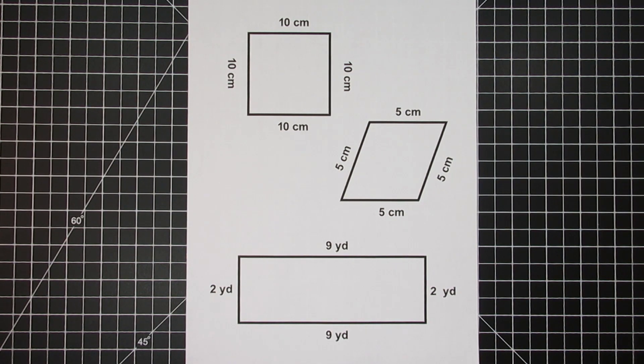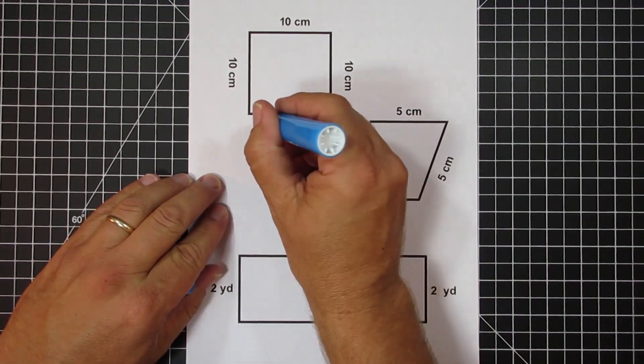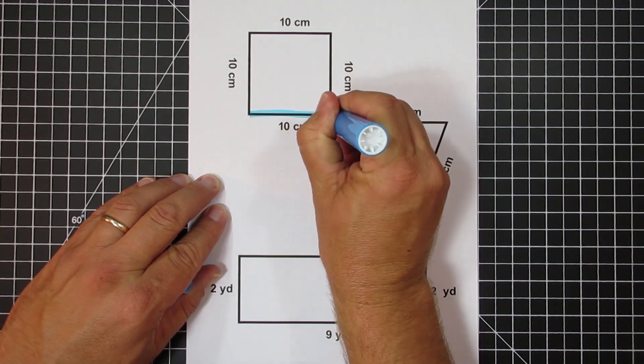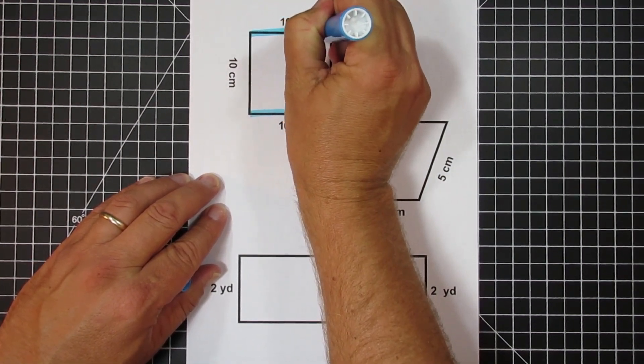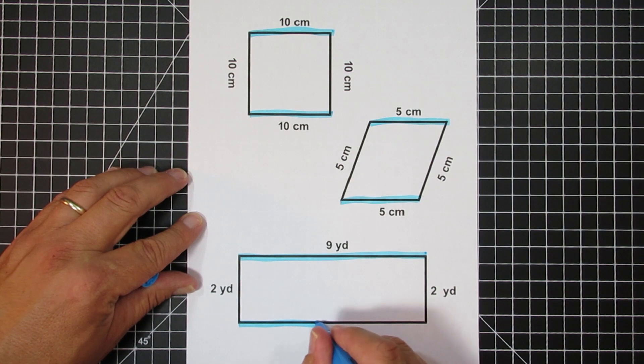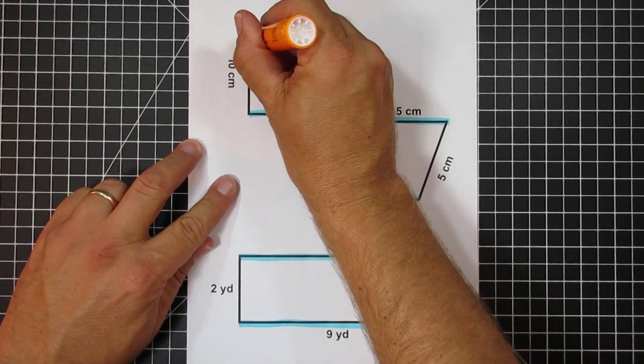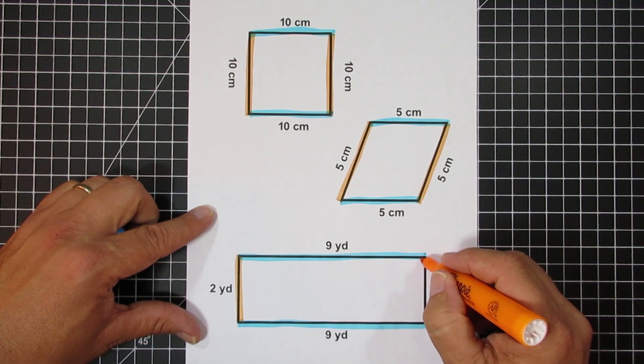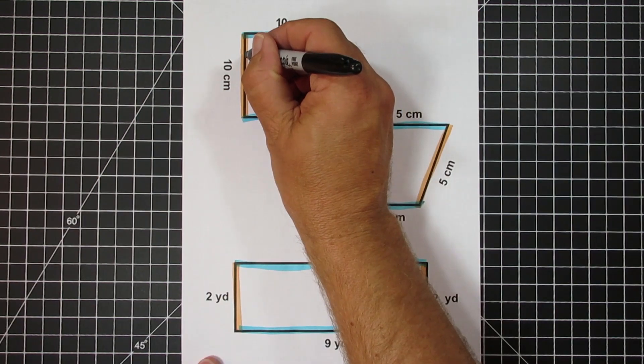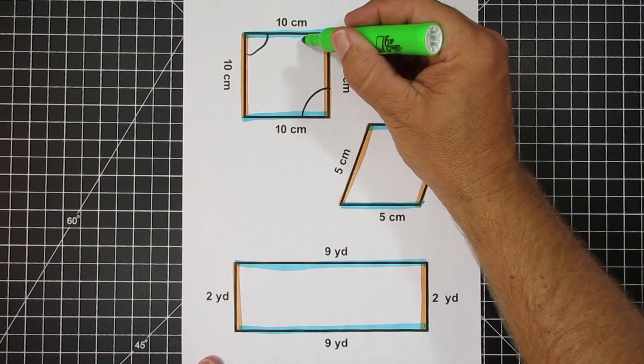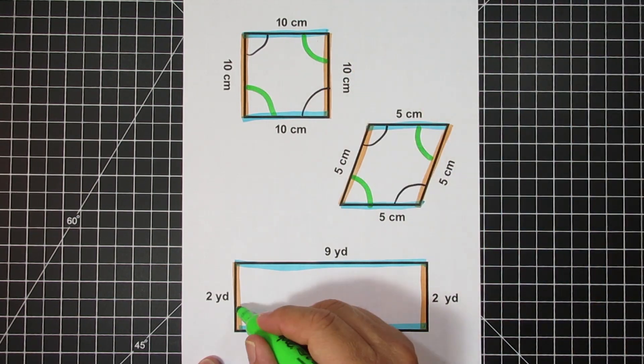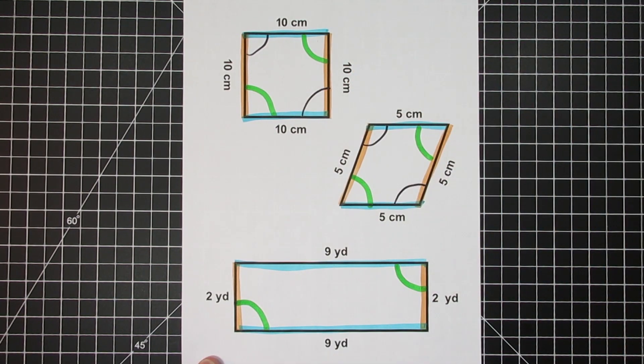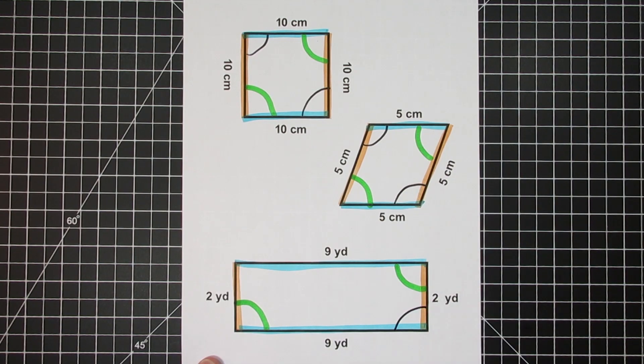If we look at these three shapes right here, the square, rhombus, and rectangle, each of them have four sides, each of the sides are straight lines, the opposite sides are the same length, the opposite sides are also parallel with each other, and when we look at the angles, the opposite angles of all these shapes are the same. Now in the rhombus and the square they actually happen to be 90 degrees.